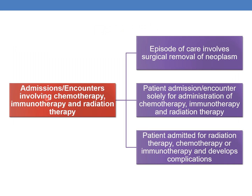Coming to admissions or encounters involving chemotherapy, immunotherapy, and radiation therapy. This is subcategorized into three guidelines: first, episode of care involving surgical removal of neoplasm; second, patient's admission or encounter solely for the administration of chemotherapy, immunotherapy, or radiation therapy; and third, patient admitted for radiation therapy, chemotherapy, or immunotherapy and develops complications.